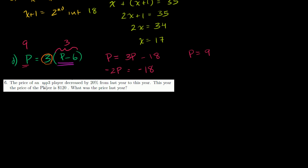Problem six. The price of an mp3 player decreased by 20% from last year to this year. This year, the price of the player is $120. What is the price last year? So let me say, let p is equal to the price last year. And they're telling us that the price of an mp3 player decreased by 20% from last year to this year. So let's take 20% away from this. So price minus 20% of the price. This is decreasing by 20%. It's equal to the price this year, which they're telling us is $120.